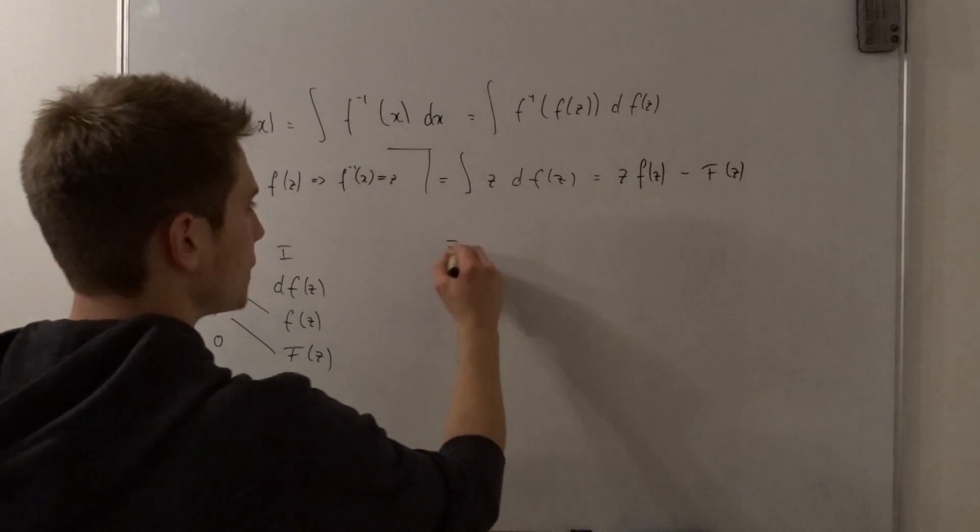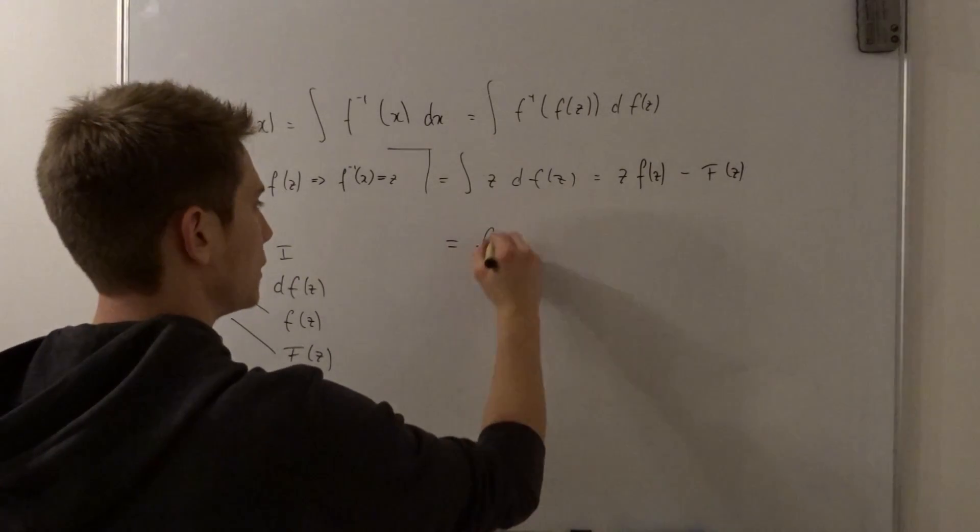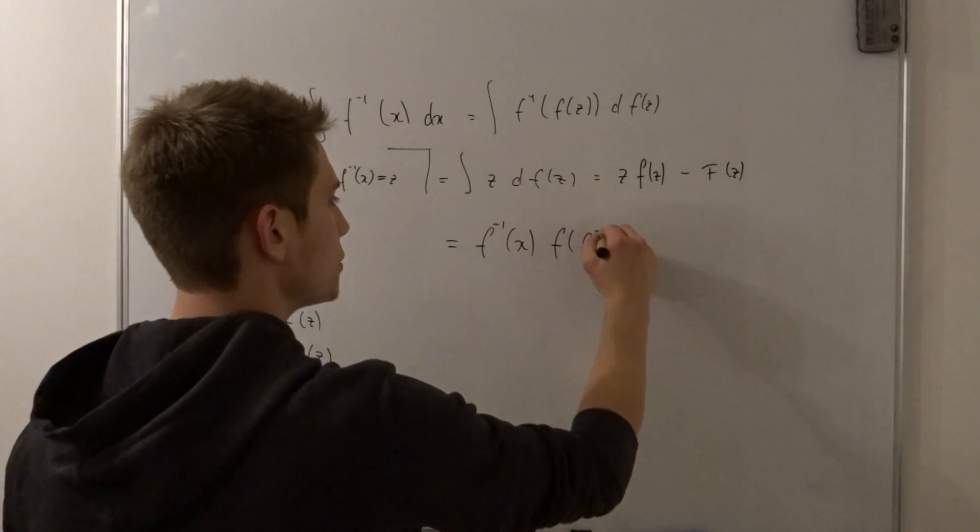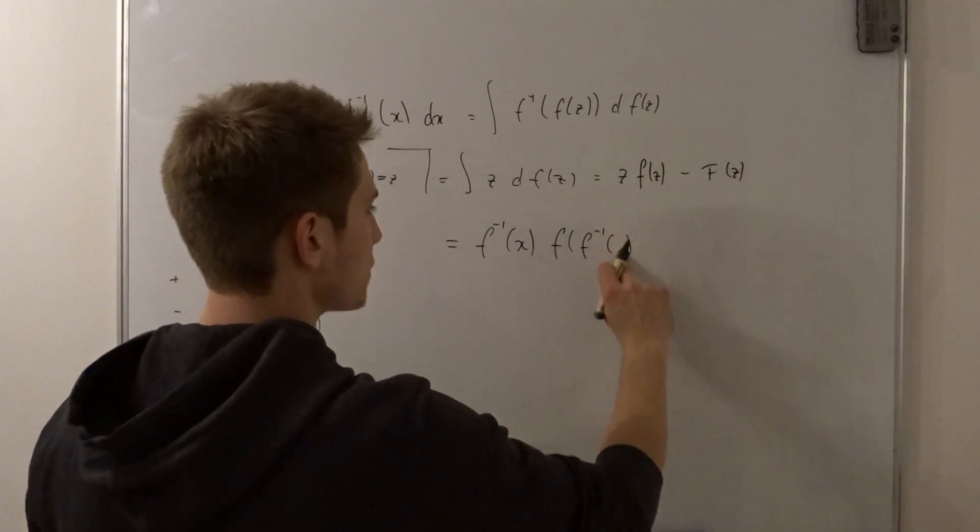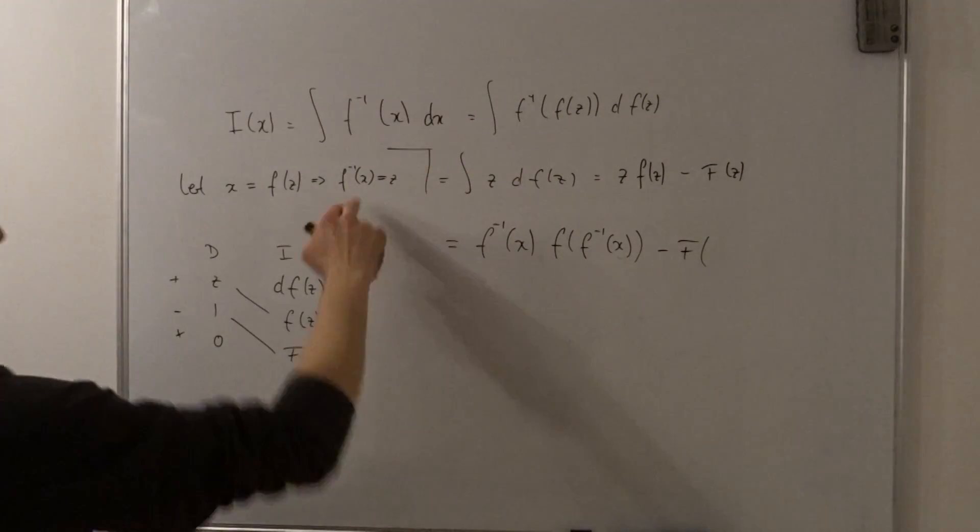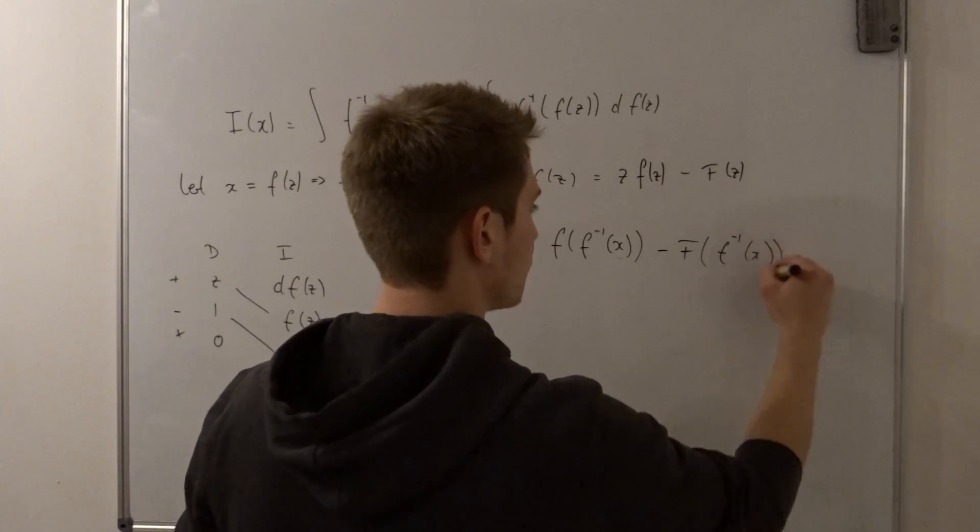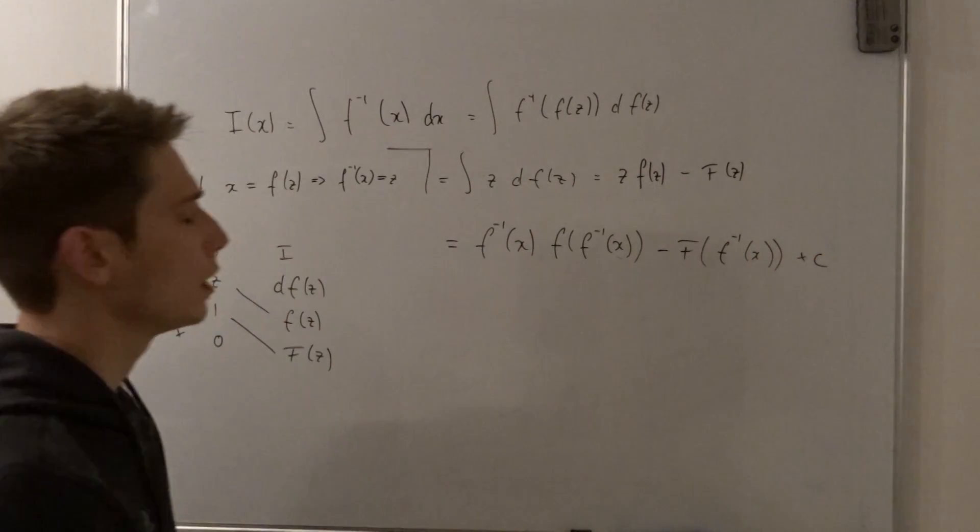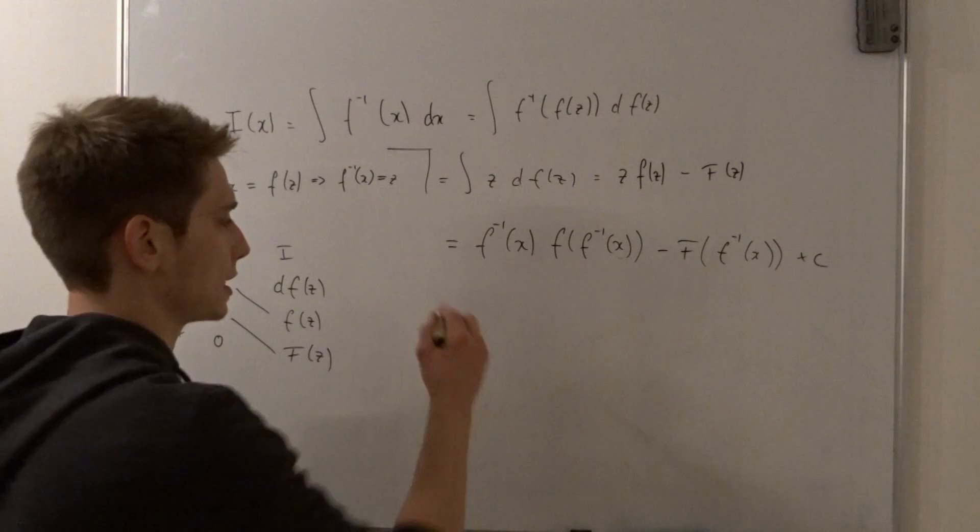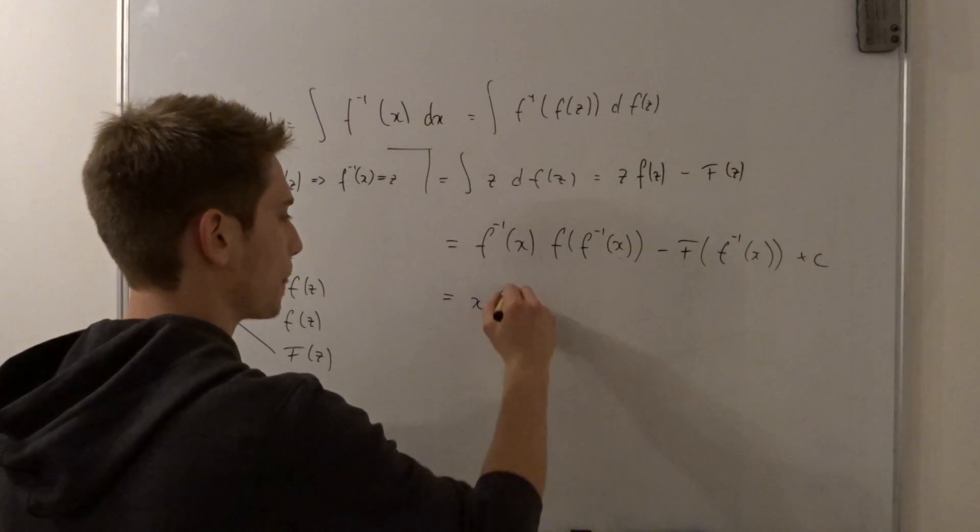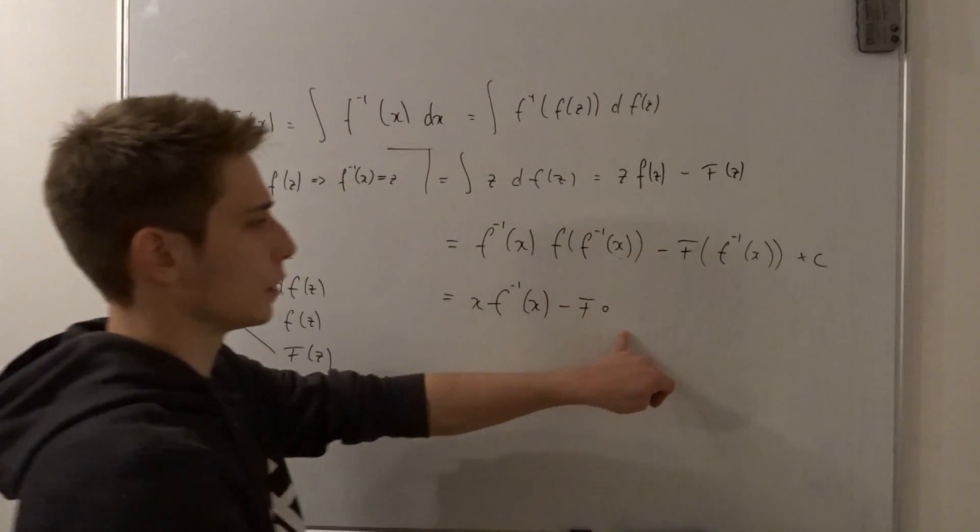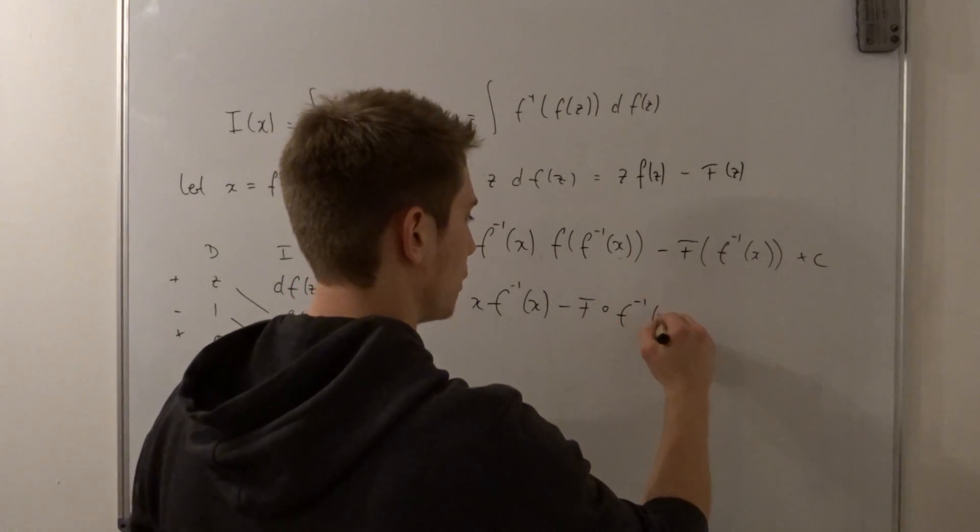Okay, and now we can plug everything in we've got. So that's equal to, z is the inverse function of x, and then we have the function of the inverse function of x, minus the primitive of the inverse function of x, plus some arbitrary constant c. We are using a function on an inverse function so those cancel out. So what we are left with is x·f^(-1)(x) - F(f^(-1)(x)) + c.